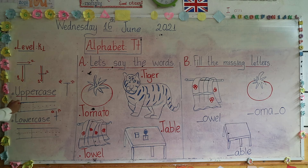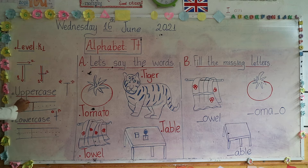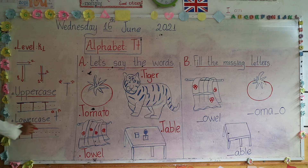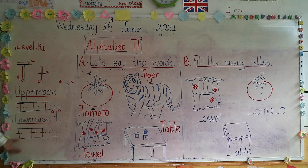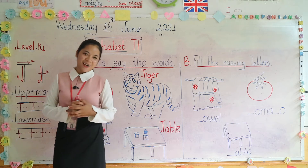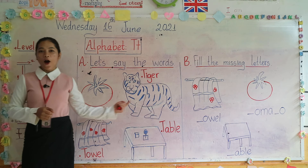And lowercase T — how many steps? Two steps, right. The first is down, the second is straight. One and two. Let's write the uppercase T: one and two, ready go, one and two. Let's write it one last time: one and two. Great job class. Next is lowercase T: the first is down, next is straight. One, two. Last time: one and two. Great job class. This is uppercase T and this is lowercase T. The letter T, the sound is T. Great job class.